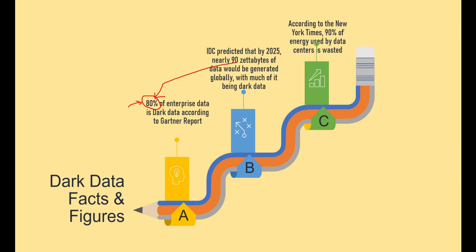According to the New York Times, 90% of the energy used by data centers is wasted because of dark data. This is very key when talking about green energy — you are wasting a lot of global energy used for data centers, for storage, processing, or maintaining those data centers. It is crucial to either understand this data and make use of it, because you are already spending a lot of energy for the capacity, processing, and storage of these data centers.